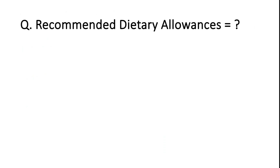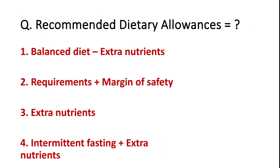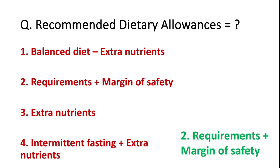Recommended Dietary Allowance equals: balanced diet minus extra nutrient requirement plus margin of safety, extra nutrient, or intermittent fasting plus extra nutrient? The correct answer is: Recommended Dietary Allowance equals requirement plus margin of safety.